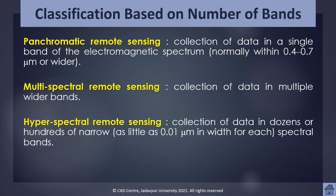However, in some instances, a wider region is also used, for example 0.3 to 0.9 micrometers. Therefore, if a sensor captures images in a single band in the microwave region, it cannot be considered panchromatic remote sensing. It must use the visible region or a wider region including the visible region to qualify as panchromatic remote sensing.